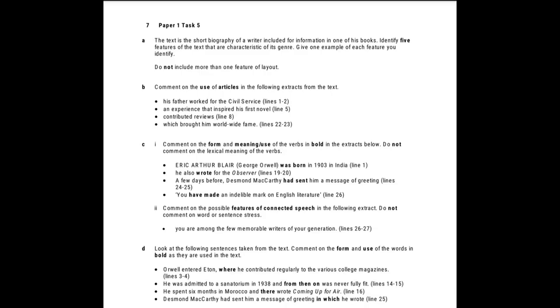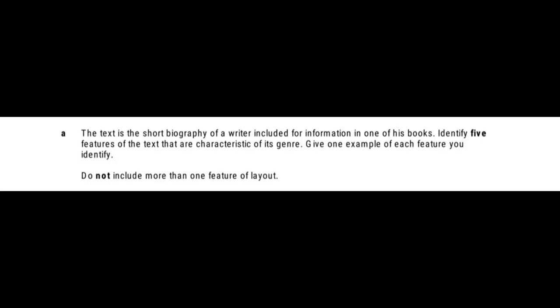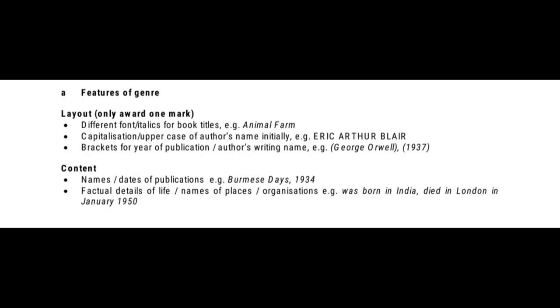In task number five, they give you a text — this time it's not written by a learner — and you need to do five different sub-tasks on this text. Task 5a requires you to enlist five features of the text that are characteristic of its genre, plus you need to provide one example for each feature. Pay attention to what they say about the layout feature, as at times they want you to include it and at other times they do not. Feel free to hit the pause button if you need it to review the examples.